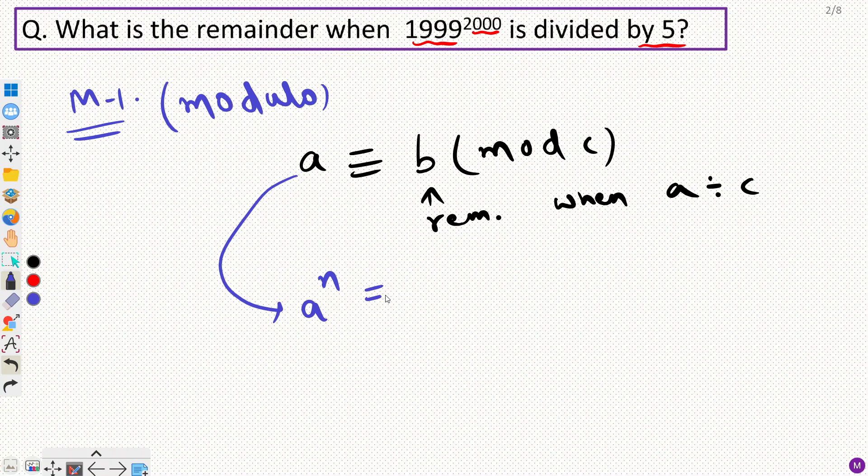Now the good thing over here is that we can raise it to a big power. Let's say A raised to power N. Then I can raise my remainder to the same power.